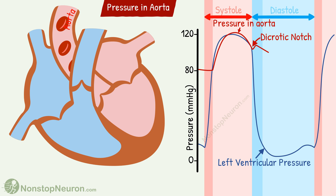This notch due to backflow is called a dicrotic notch or incisura. So this was all during systole and early part of the diastole. Later in the diastole, the blood in the aorta keeps flowing forward, so pressure gradually falls. By the end of the diastole, it reaches the lowest value of 80 mmHg. Even this lowest value is also high in the aorta because of the elastic recoil of the valve, which is helpful to keep the blood moving forward during diastole.